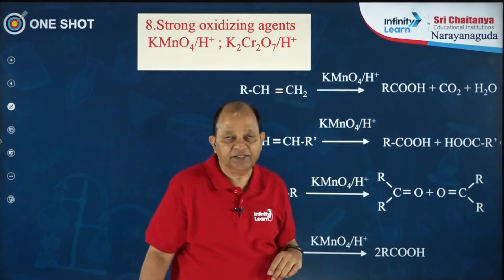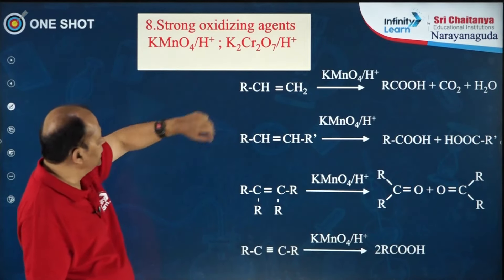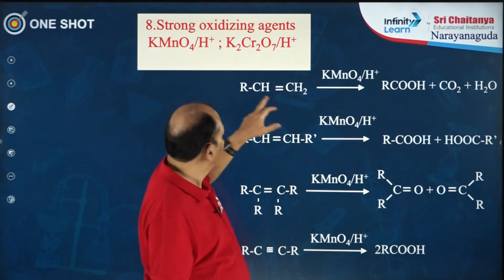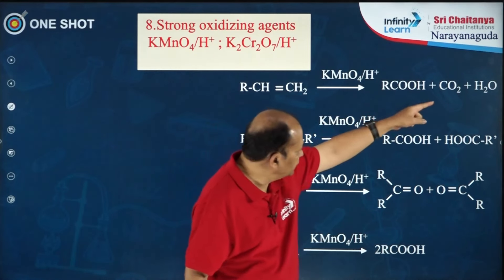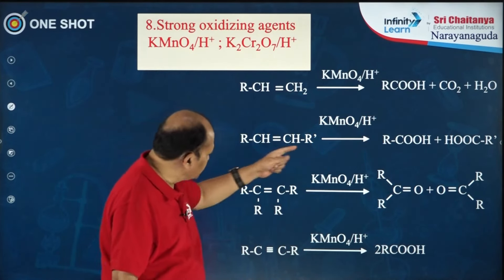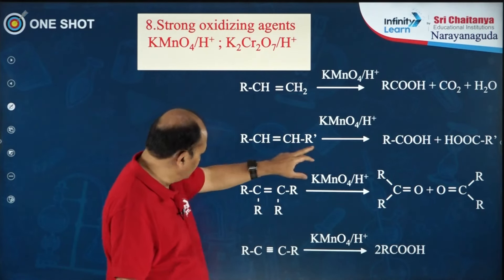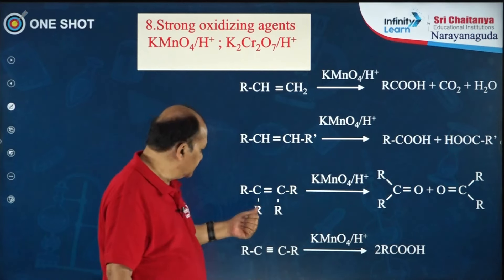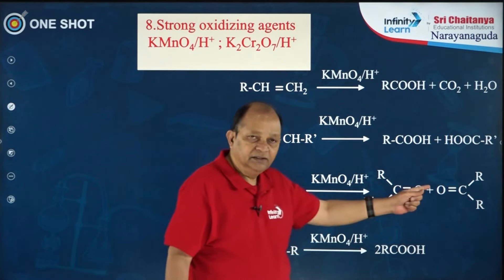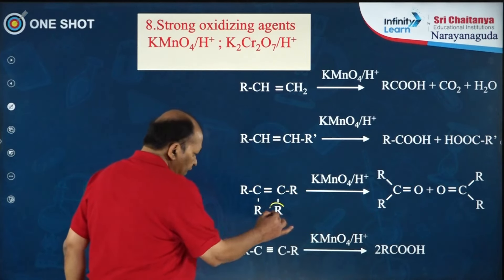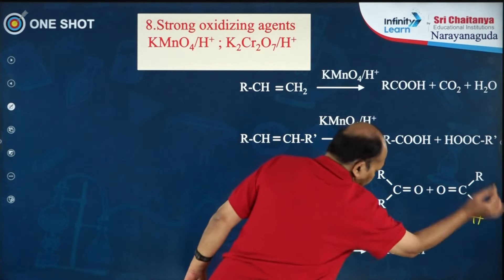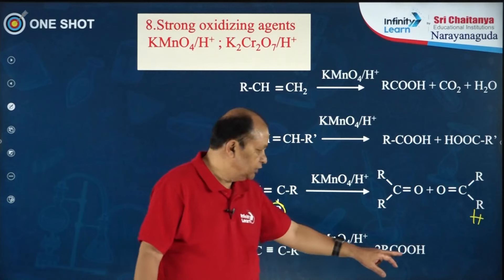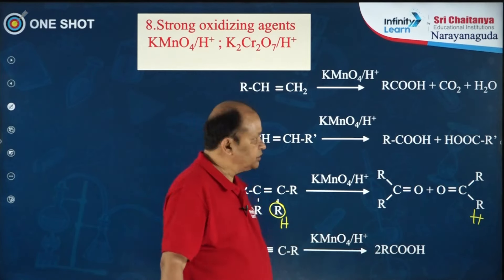Now moving to oxidizing agents: potassium permanganate is a stronger oxidizing agent, as is potassium dichromate. With alkene using a strong oxidizing agent, you get carboxylic acid, carbon dioxide, and water. For a substituted alkene with substituents on both sides, you get two carboxylic acids. For a tetra-substituted alkene you get ketones. If hydrogen is present on the alkenic carbon, you get aldehyde, and a disubstituted alkene with KMnO4 gives two molecules of carboxylic acids.